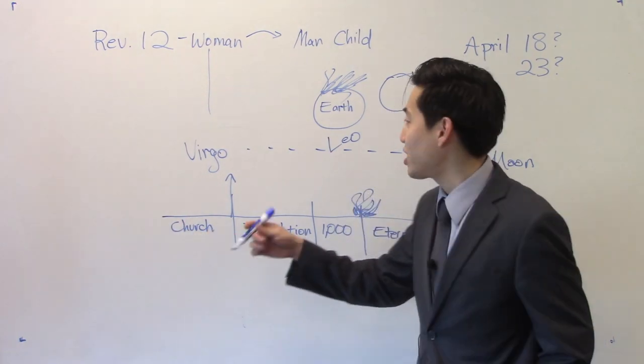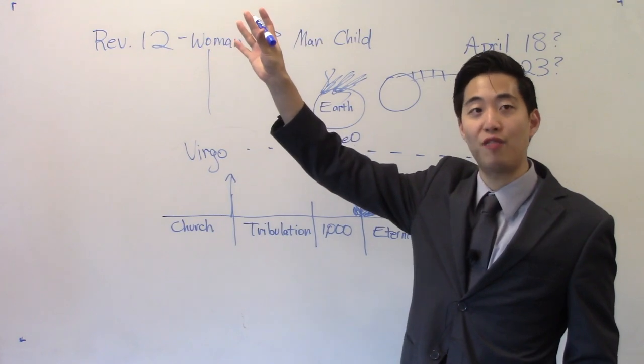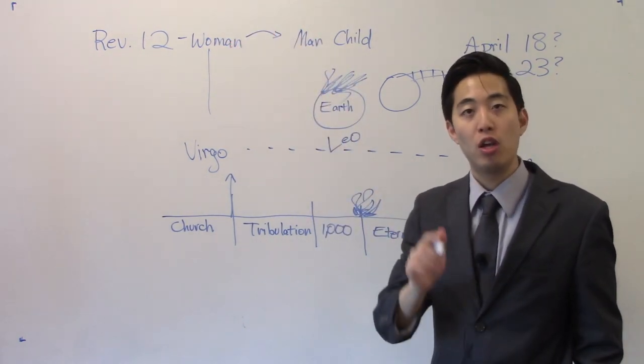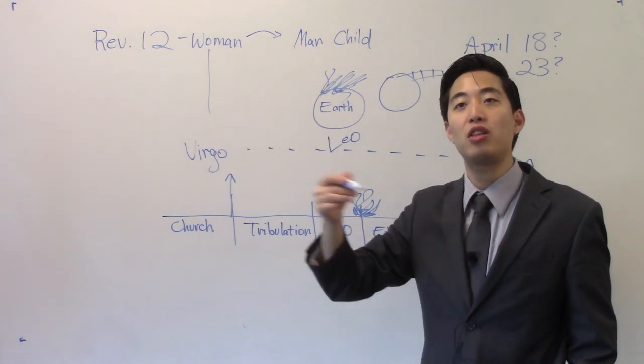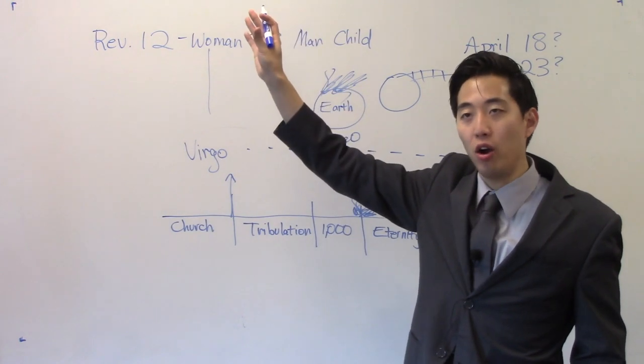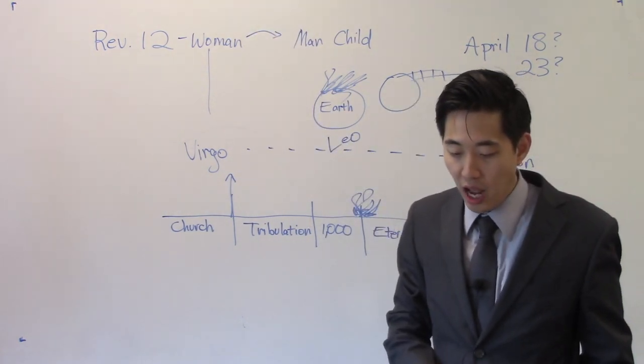So it shows right here that this thing, they're just finding whatever star and constellation they can find in the universe, to fit it with the interpretation of the Bible. You know what the Bible warns? Twisting, resting the Scriptures to your own destruction. Don't fit the Scripture to the star. Never do that.